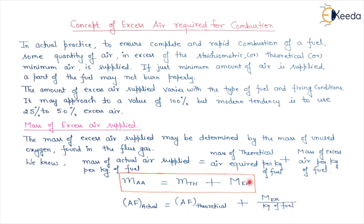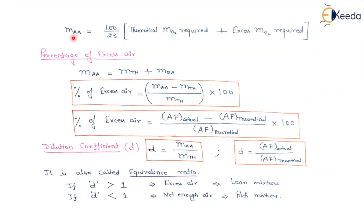The mass of actual air is equal to 100/23 multiplied by the bracket of theoretical mass of oxygen required plus excess mass of oxygen required. In terms of percentage, the mass of excess air is calculated as: (mass of actual air minus mass of theoretical air) divided by mass of theoretical air, multiplied by 100.